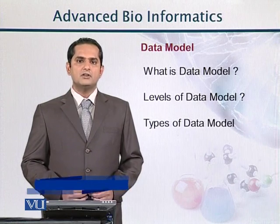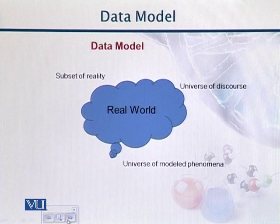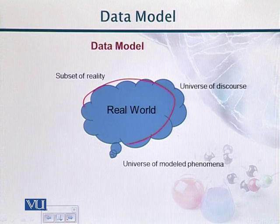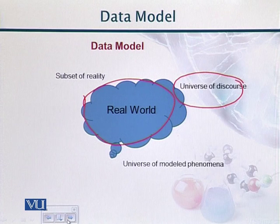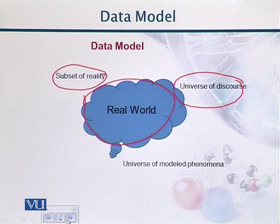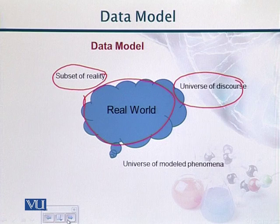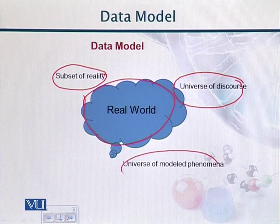If I say about the definition of data model, how can I define this? If you see this diagram, there is a cloud shown which basically depicts our real world, which contains many billions of items and entities. So what is our data model? Data model is basically our universe of discourse, which is a smaller part of this real world, and that universe of discourse is basically a subset of reality. It is not the complete world; it is some subset of that complete world. The other thing is universe of model phenomena — what we are going to model, that would be our universe of model phenomena.